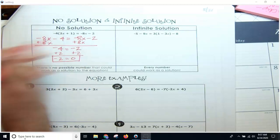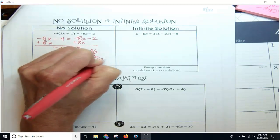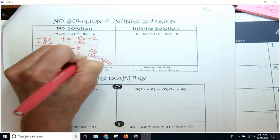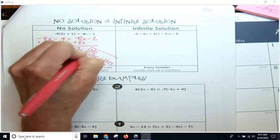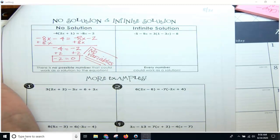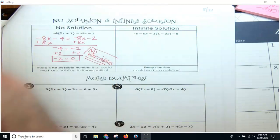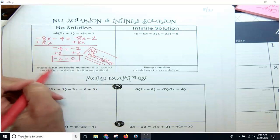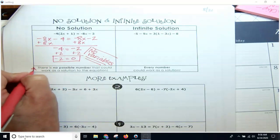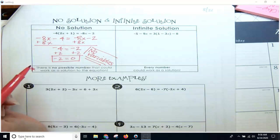At this point, you know there are no variables. This is critical—if you still have a variable, then it will not be no solution or infinite solution. So just make sure that there are no variables. Basically what this is saying is there is no possible number that can work as a solution to this. No matter what number I plug in for x, this cannot be true.